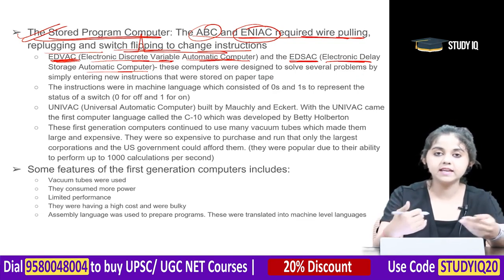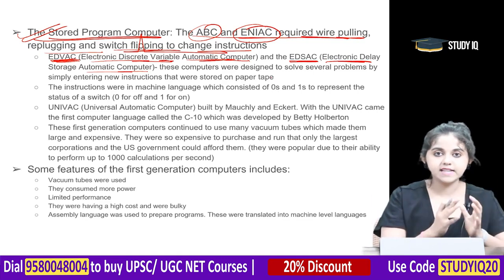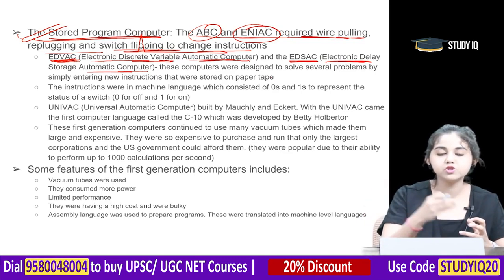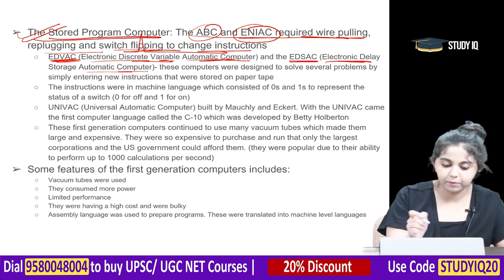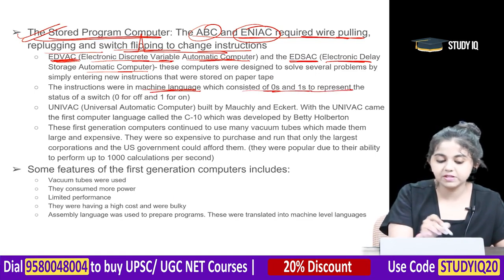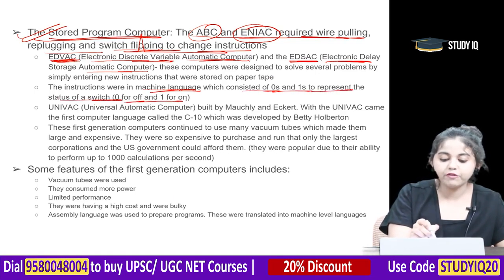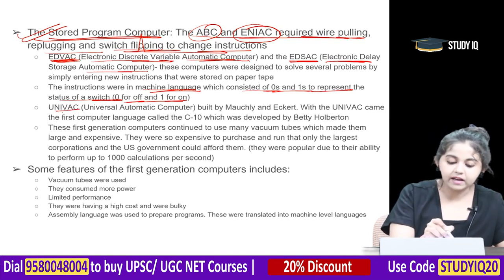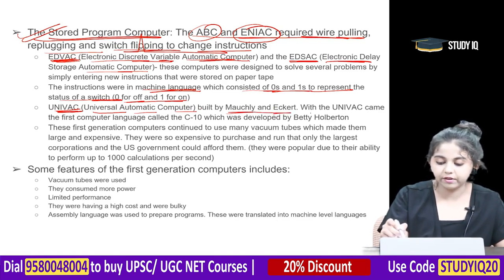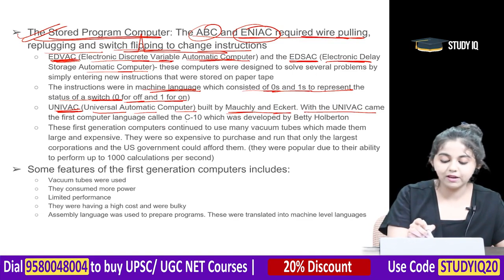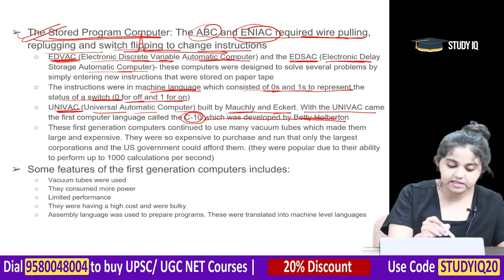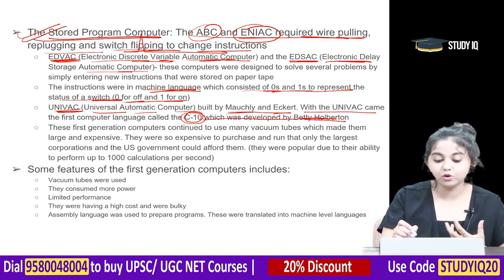These computers were designed to solve problems by entering new instructions stored on paper tape. Instructions were in machine language consisting of zeros and ones — zero for off and one for on. The UNIVAC — Universal Automatic Computer — was built by Mauchly and Eckert. With UNIVAC came the first computer language called C10, developed by Betty.